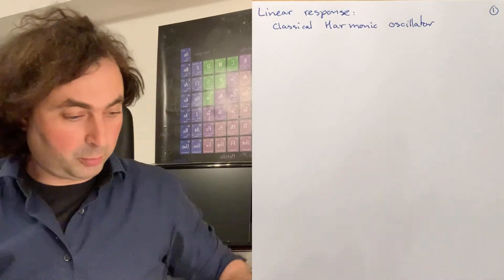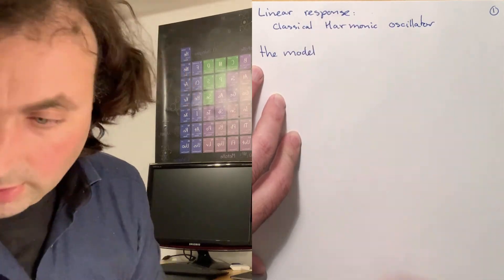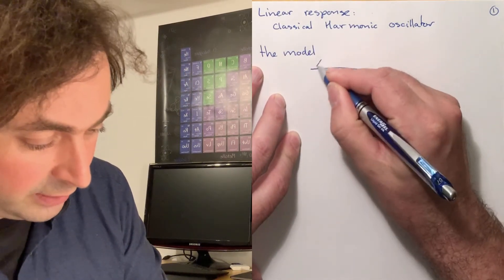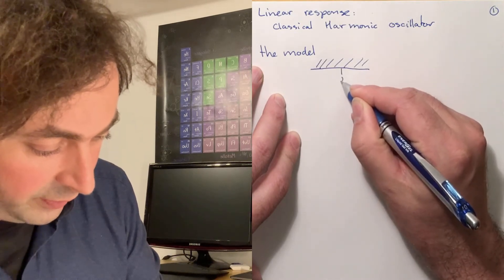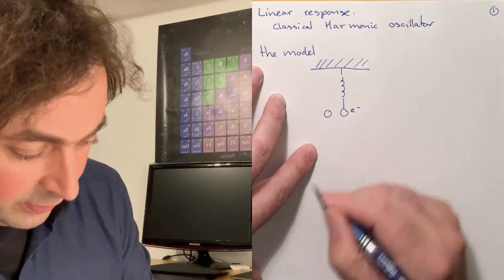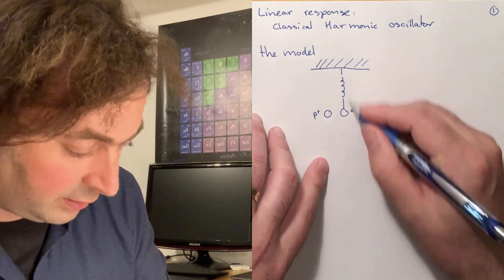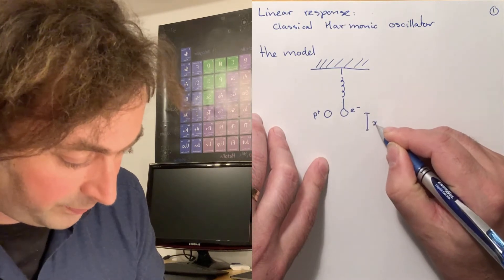Welcome to our next lecture in the series on condensed matter theory. In this video I want to talk about linear response functions and have a look at what the linear response functions are for a classical harmonic oscillator. The model that we're going to use is basically given by an electron connected to a fixed wall by a spring, and in order to make sure that everything is charge neutral we put another positive charge at the center where x is equal to zero.